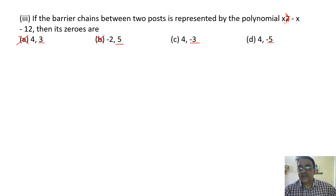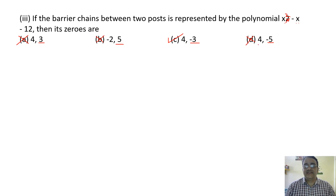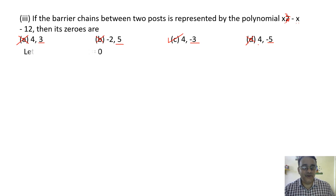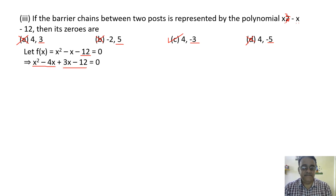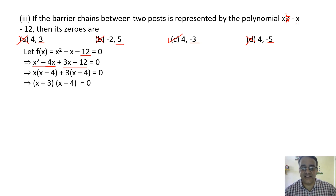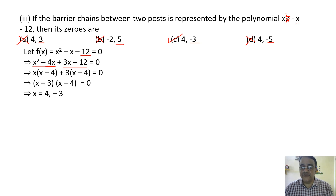Since minus 3 satisfies it, the correct option is C. To solve properly: equate with zero, product is minus 12, factors 4 and 3 with sum minus 1 — so minus 4 and plus 3. Taking x common and plus 3 common gives x minus 4 into x plus 3 equals zero, giving zeros 4 and minus 3. Correct option is C. The elimination method works great for MCQ in any subject.